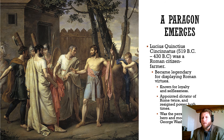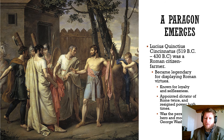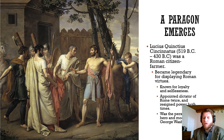Lucius Quinctus Cincinnatus — and if you're familiar with Cincinnati, Ohio, it's named for him. He is a legendary figure in Roman history. He is a dictator, which is an appointed position in the Roman Republic. In a time of crisis, you would be appointed dictator, given essentially absolute power for about six months to face whatever threat Rome needed dealt with, and then hand that power back.